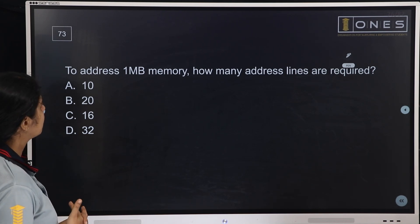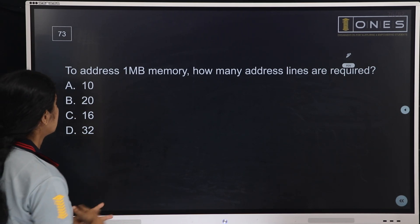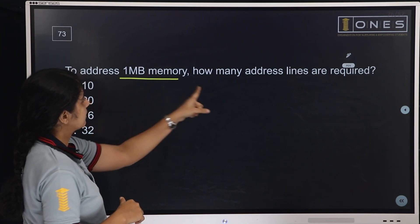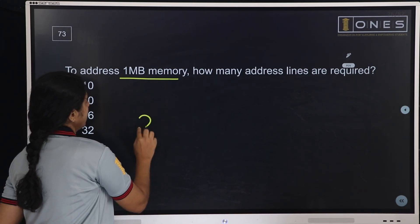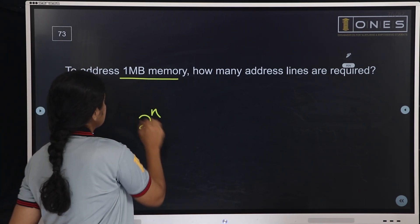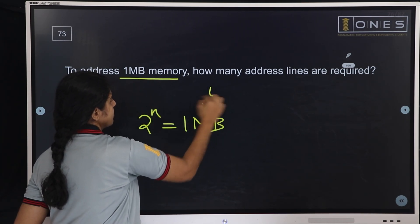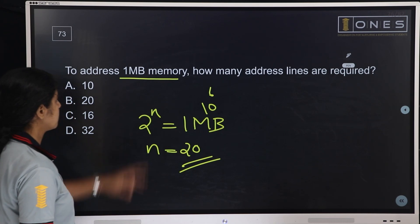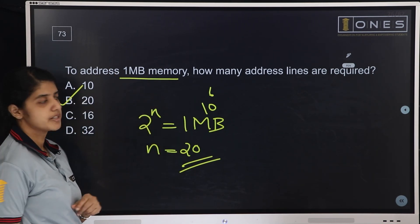Next question: To address 1 MB memory, how many address lines are required? This is a microprocessor and digital question. The equation is 2^n address lines. So 2^n = 1 MB = 2^20, therefore n = 20 address lines are required. Option B is the correct answer.